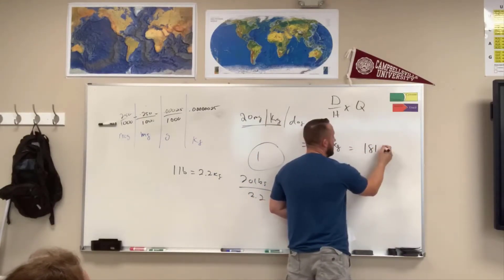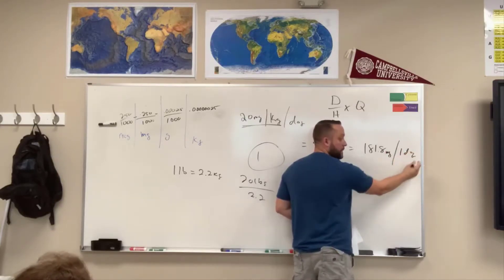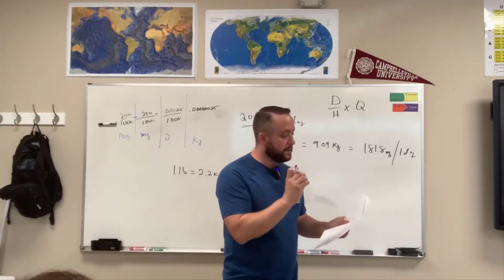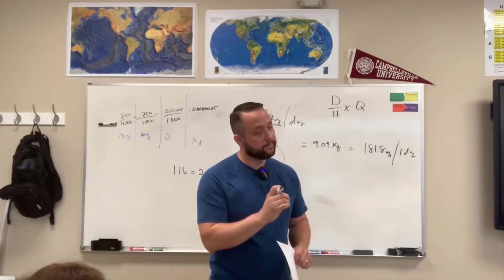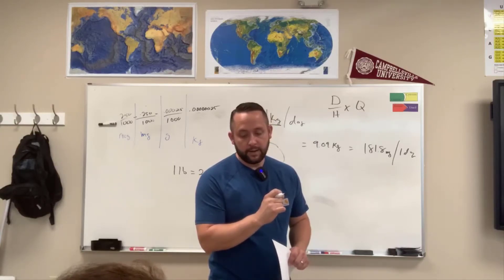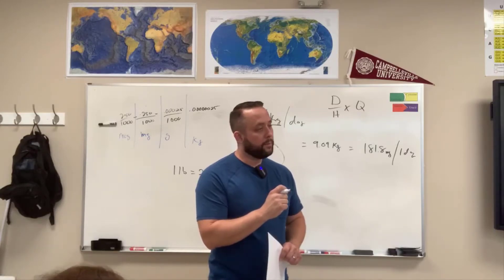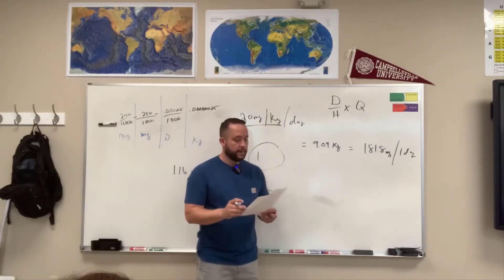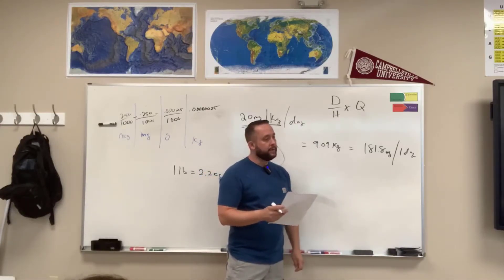So that gives us 181.8 milligrams in one day — that's the whole dose they're supposed to receive for the whole day. But if you look at the question, it says 'in three divided doses.' So the slash line represents 'per kilogram.' Now, Melissa, what's the last step? The order says 20 milligrams per kilogram per day — we've got that done — in three divided doses.